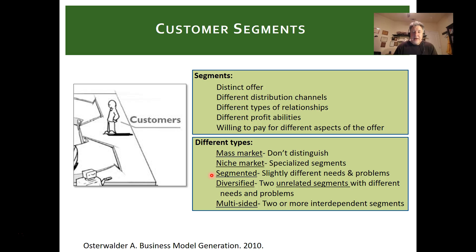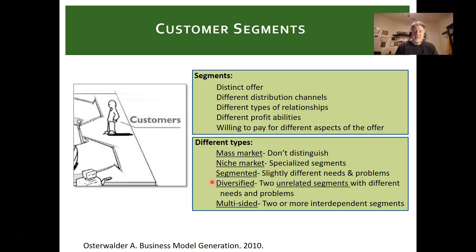Then there's diversified — a business like GE or Berkshire Hathaway with diversified businesses. Coke and Pepsi have unrelated segments with different needs and problems. And multi-sided is the classic example — like a newspaper or Google — where you have free customers getting things for free, and customers who pay for access to that freemium customer base. Another example is Nextdoor.